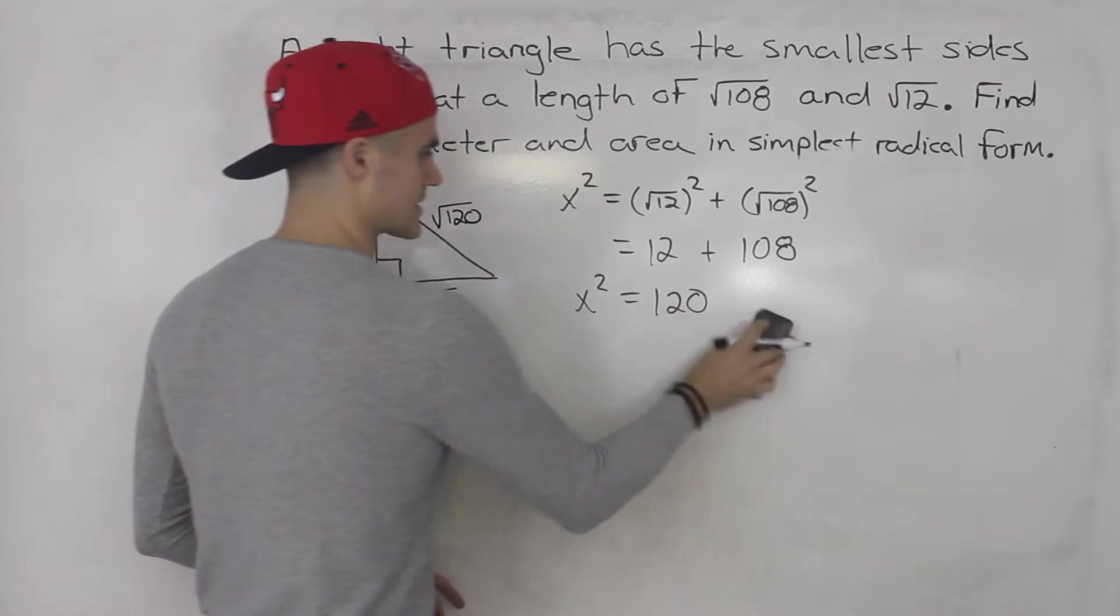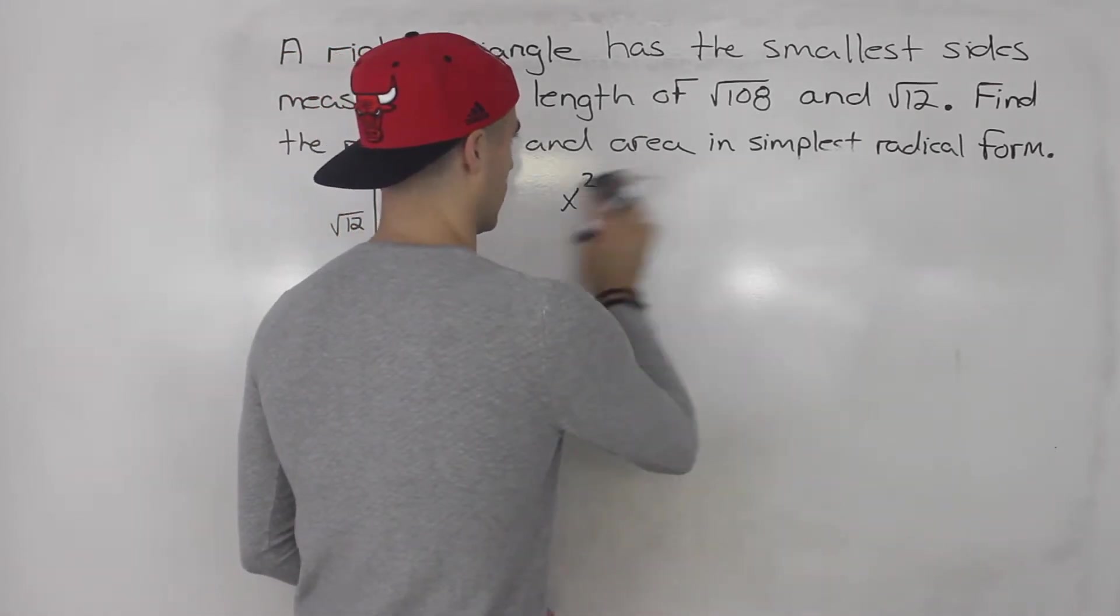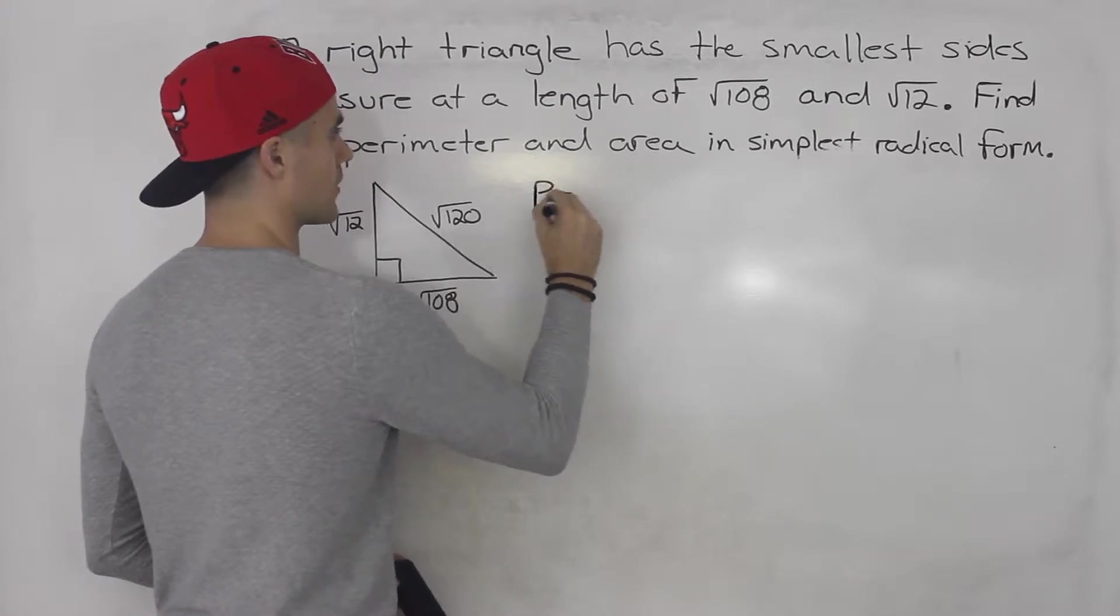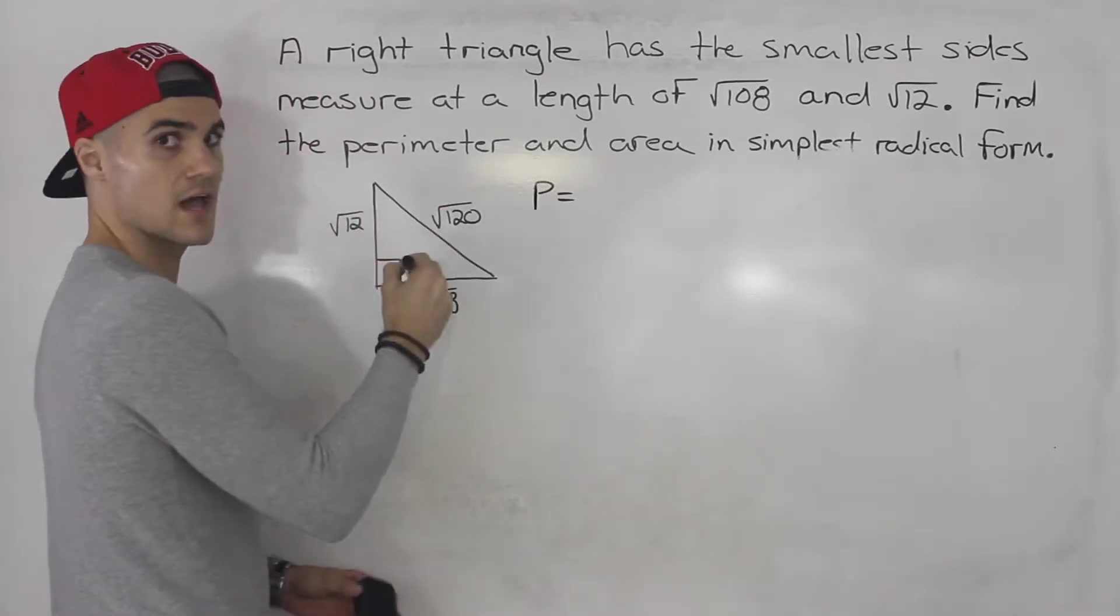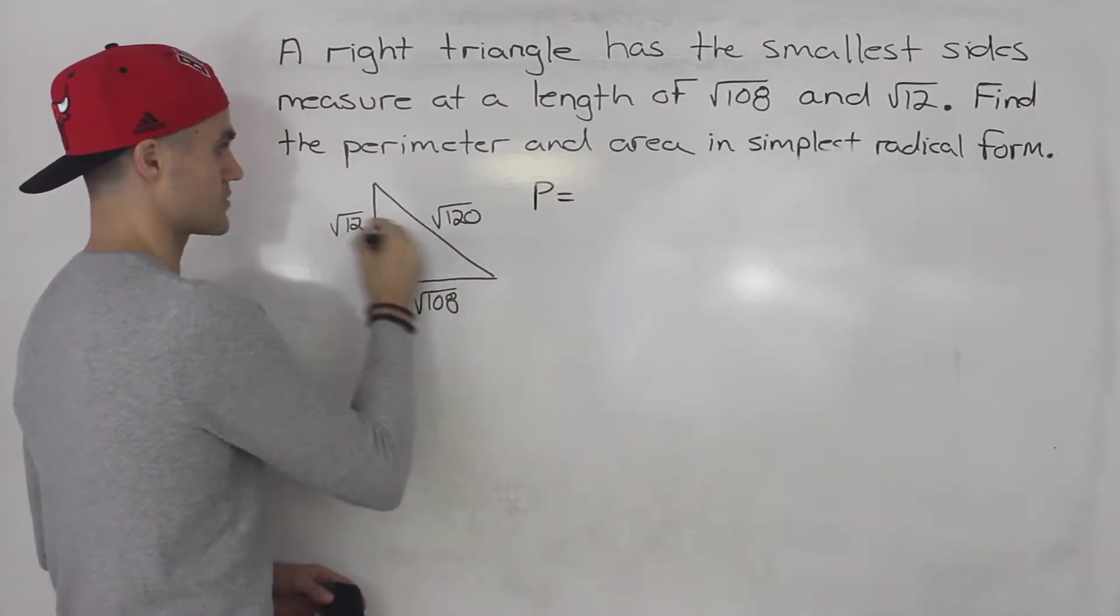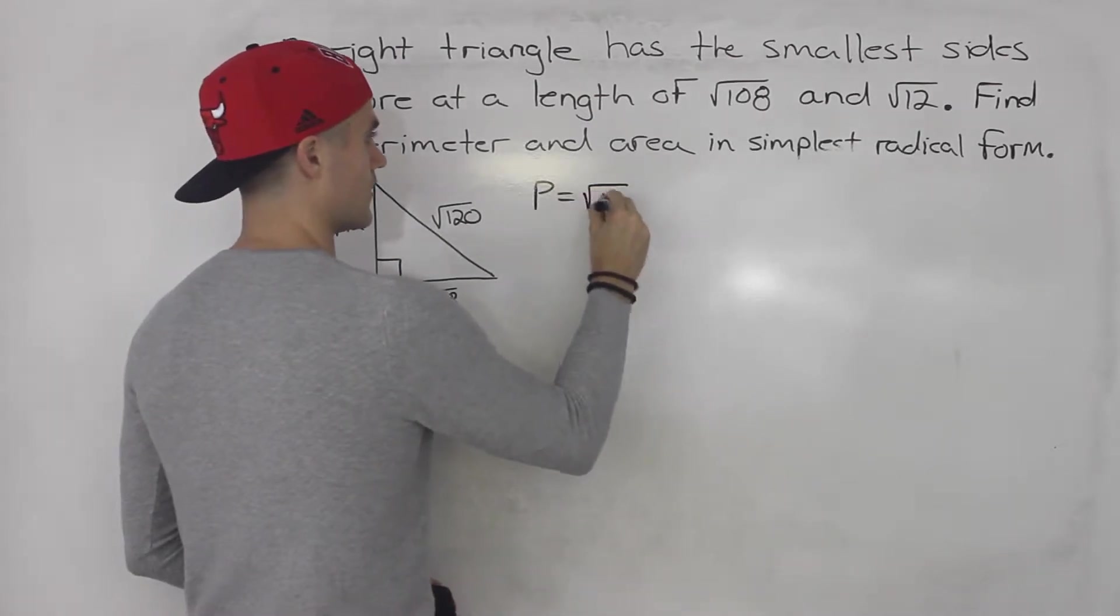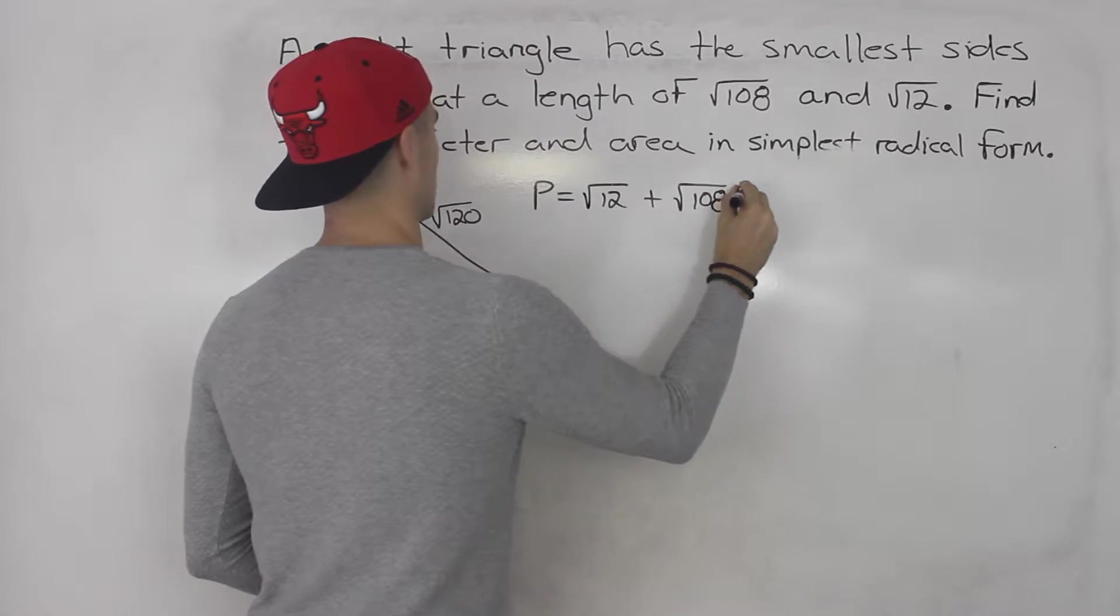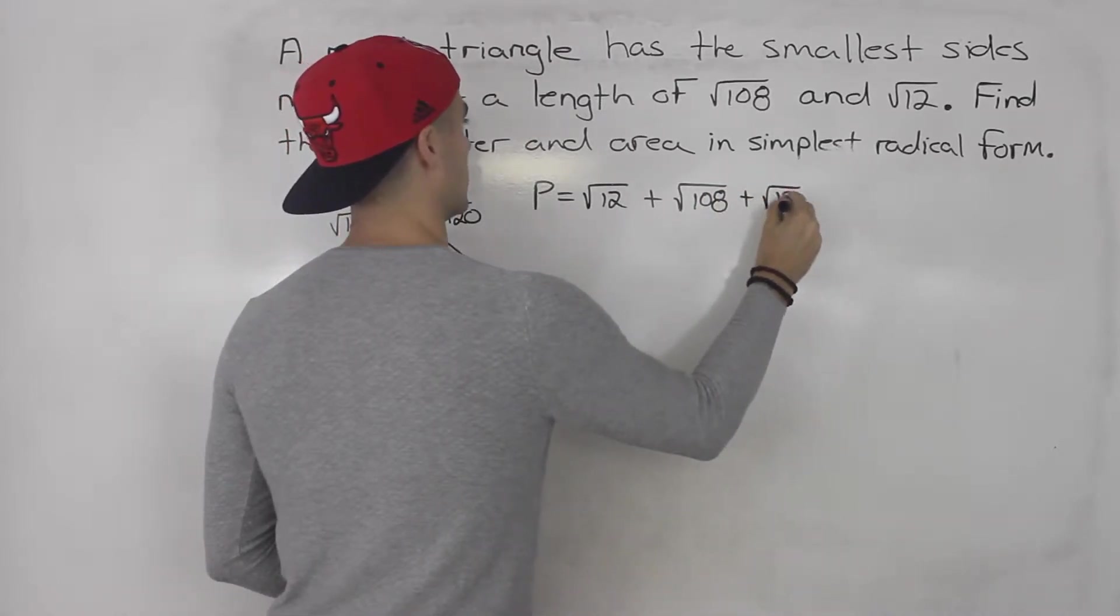And now let's get into what we have to solve for. So the perimeter, to start with the perimeter, it's basically all of the sides added together. So root 12 plus root 108 plus root 120.